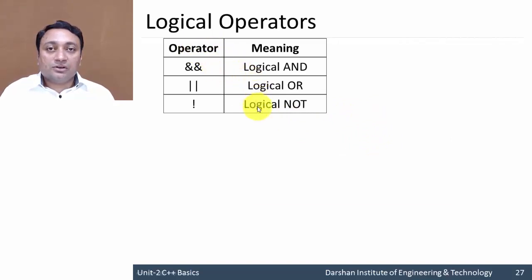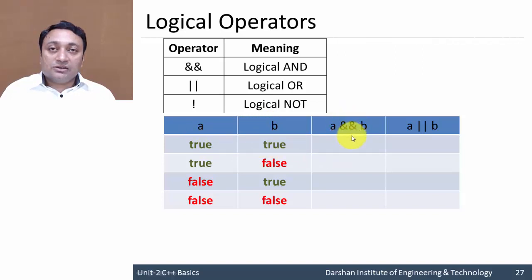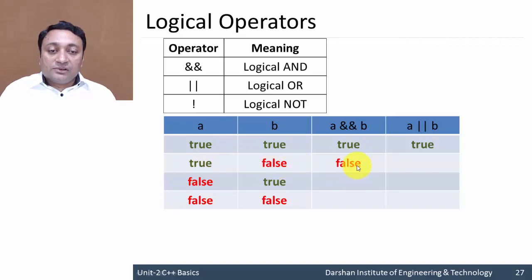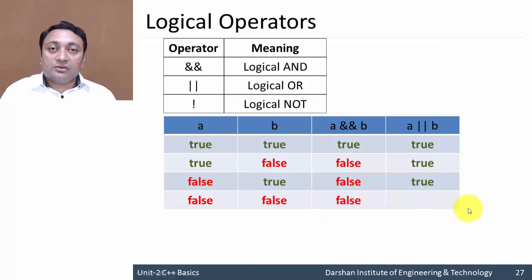Logical OR, and logical NOT — used to represent the logical relationship between two expressions. Here is the truth table. Suppose we have two expressions A and B. If both are true, AND returns true and OR returns true. If first is true and second is false, AND returns false while OR returns true. If first is false and second is true, AND returns false while OR returns true.